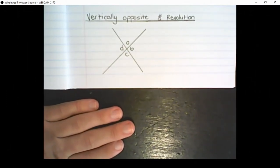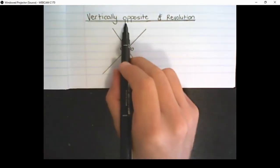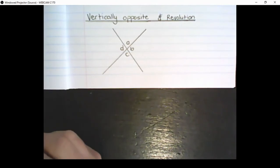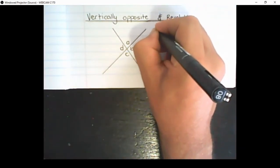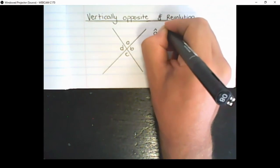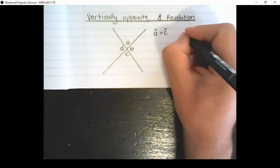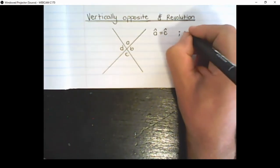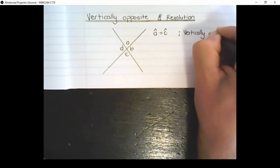The next two geometric principles we can combine. That will be vertically opposite angles and revolution. I can say that angle A is equal to angle C because they are directly opposite each other. And the reason I would use is vertically opposite angles.